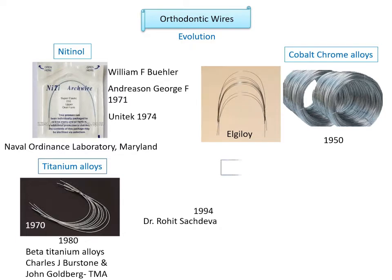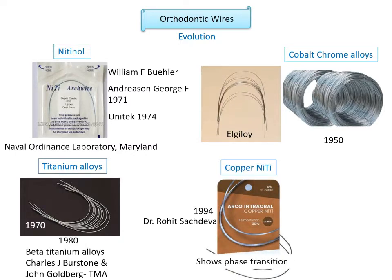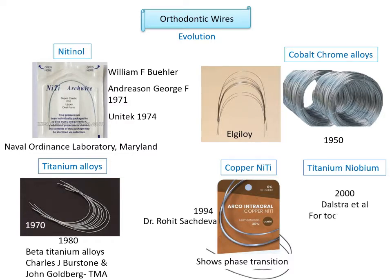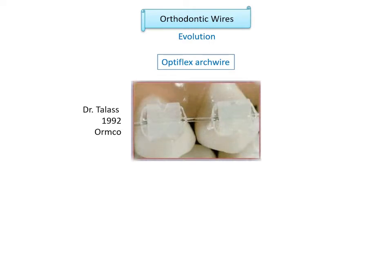In 1994, Dr. Rohit Sachdeva invented Copper NiTi for orthodontics, which exhibits the special feature of phase transition at temperatures 15, 27, 35, and 40 degrees centigrade. In 2000, titanium niobium was introduced by Dalstra et al., used for tooth-to-tooth finishing. A recent advancement is the introduction of new materials like composites and fiber optics. Optiflex is a non-metallic orthodontic arch wire designed by Dr. Talass in 1992 and manufactured by Ormco. It is made of clear optical fiber and has unique mechanical properties with a highly aesthetic appearance.